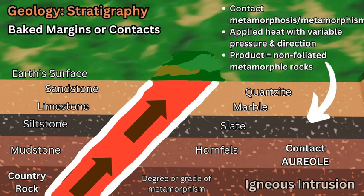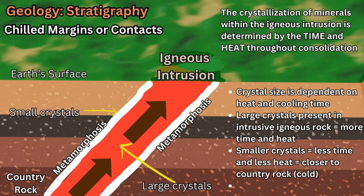Hornfels is very common in contact metamorphism, and all of these are non-foliated. They form these metamorphic rocks around the contact aureole, and the magma itself — the igneous intrusion — is going to cool down and turn into igneous rock. There is a variable of heat: the closer you are to the country rock, the colder the environment, the faster the magma is going to cool down, and therefore the crystal size formed within the intrusive igneous rock will be smaller. The hotter the environment and the longer the time period the magma takes to cool down, the crystals will be larger — this is called the law of chilled margin.